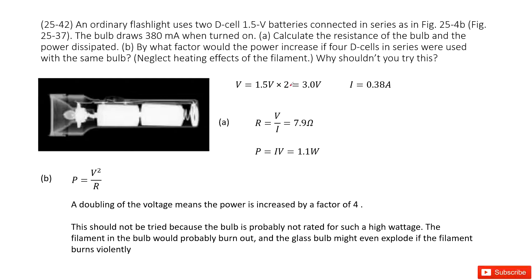And then it tells you the current goes through is just 0.38A. First question asks you calculate the resistance of the bulb and then the power.